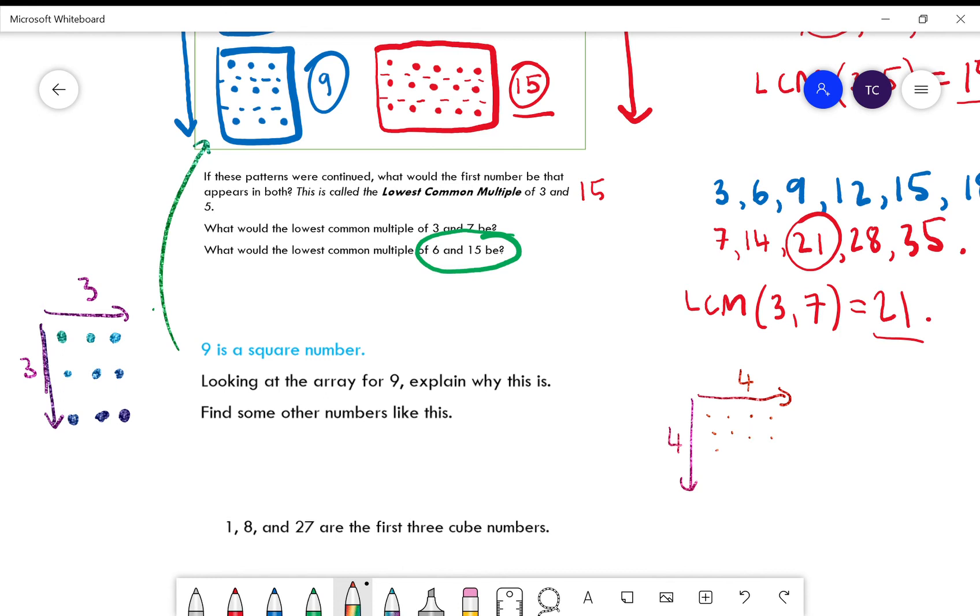If I went four down and four along, well I'd have 1, 2, 3, 4, 5, 6, 7, 8, 9, 10, 11, 12, 13, 14, 15, 16. So 16 is an example of another square number, and you might be able to find some more of your own after that.